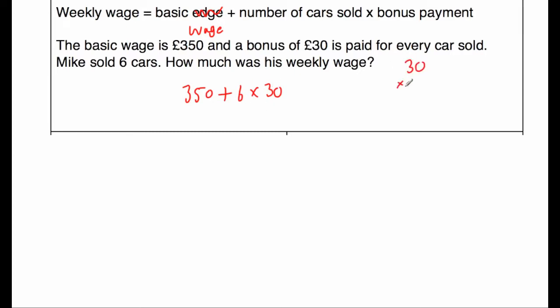So 30 multiplied by six would be six times zero is zero and six times three is 18. So for selling the six cars, he gets six lots of 30. So that's going to be 180 pounds as a bonus. So we'll do 350 plus 180. And when we do that, we get 350 plus 180 equals zero plus zero is zero, five plus eight is 13, so put the three down, carry the one, and three plus one plus one is five.